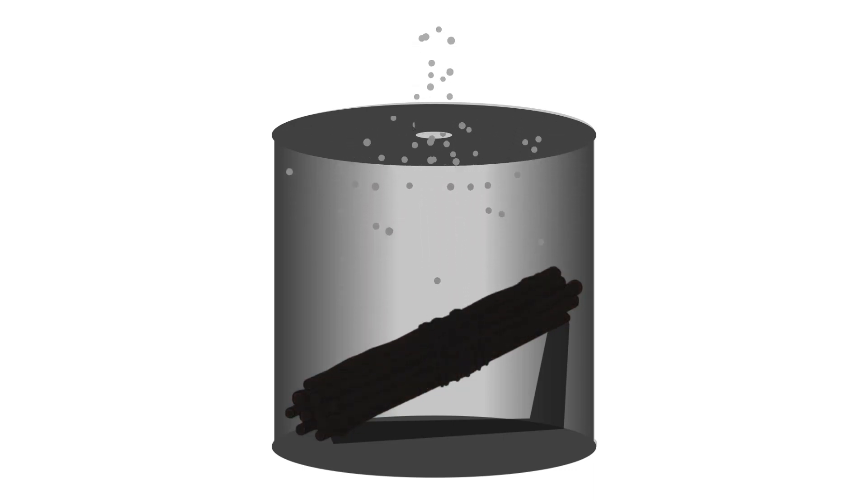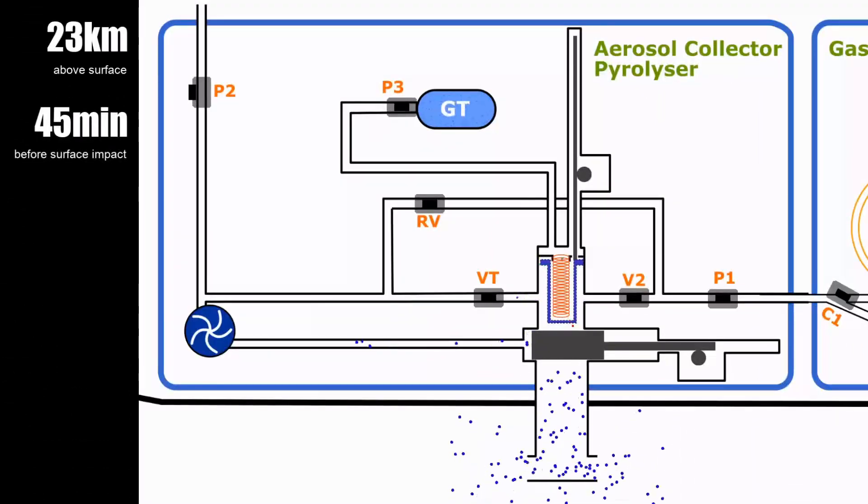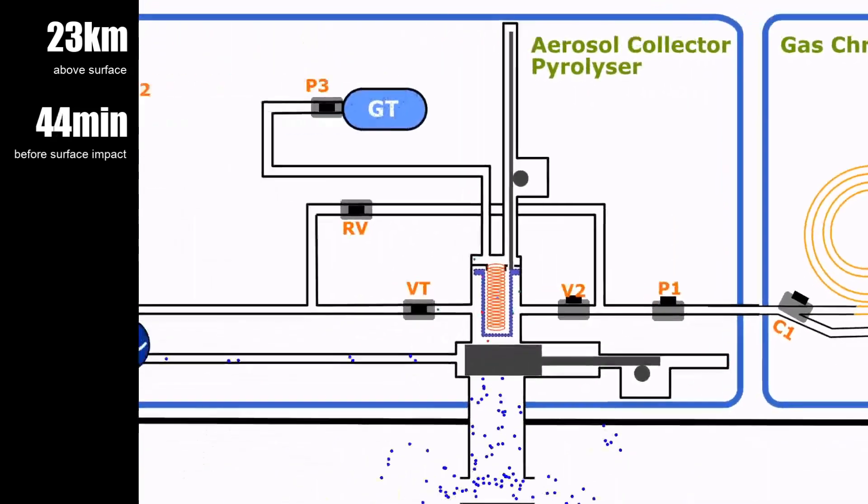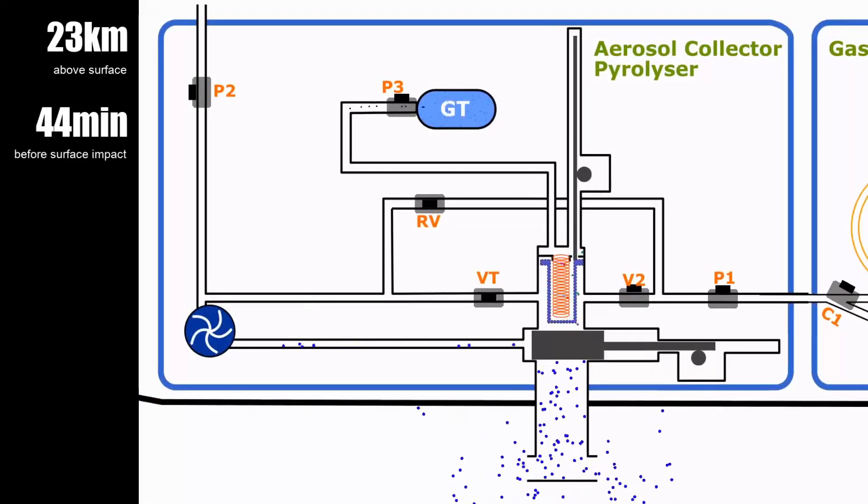46 minutes before surface impact, the gas product created by pyrolysis now has to be sent to the gas chromatograph mass spectrometer, GCMS. Valve V2, P1, C1, and C3 are now open. Valve P3 is also then open to allow pressurized nitrogen gas from the tank GT to force the gas product through the GCMS.